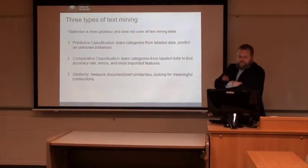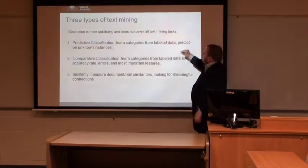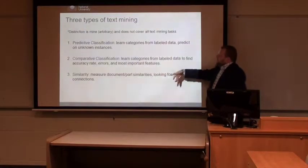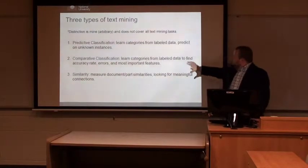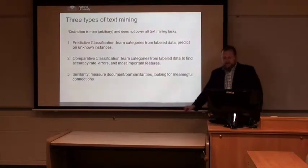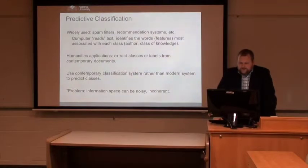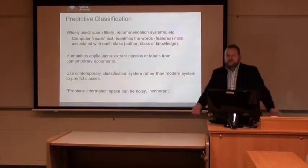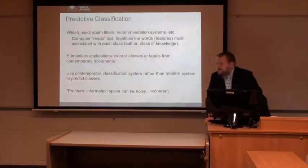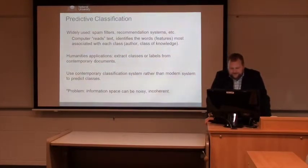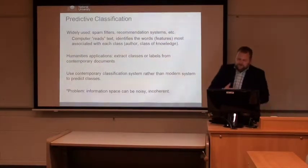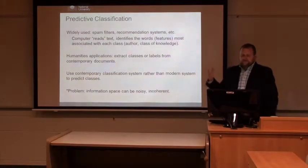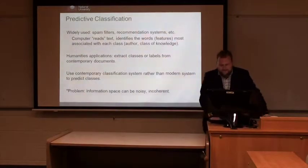For work going back five or six years with the University of Chicago, we looked at data mining in three different ways: predictive classification, comparative classification, and similarity measures — or grouping into supervised and unsupervised learning. Predictive classification is probably the most widely used data mining technique — think about recommendation systems or spam filters. The computer reads the text, identifies words most associated with each class, and processes articles into the proper category. For humanists, we can extract classes and labels from contemporary documents — say, from the 18th-century Encyclopédie — and use that classification system rather than a modern ontology to classify other texts within the historical location.